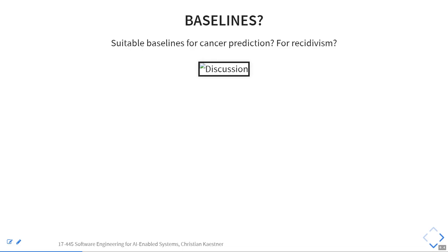What about recidivism — predicting whether somebody released from jail is likely to commit another criminal offense in the next two years? For a baseline, you could always say 'release' or 'never release.' You could look at the number of past offenses with a cutoff, or look at one feature at a time with a trivial classifier. Number of years served is another example. By doing this, you have a much better chance of interpreting a number like 99%, because you know what simple approaches can already do.